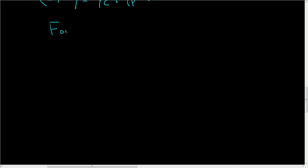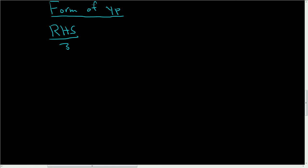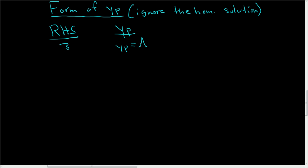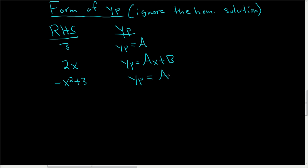Let's look at the form of y_p, because this is the hard part. We're going to ignore the homogeneous solution in these examples. If the right-hand side equals 3 (a constant), then y_p = A. If you have 2x (degree 1), then y_p = Ax + B. If you have a quadratic like −x² + 3, then y_p = Ax² + Bx + C.